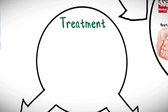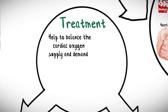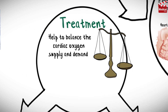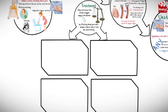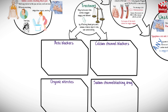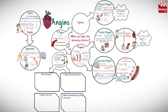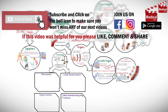To manage the symptoms of angina, we need drugs that help balance cardiac oxygen supply and demand by affecting blood pressure, venous return, heart rate, and contractility. There are four types of drugs that can achieve this, alone or in combination: beta blockers, calcium channel blockers, organic nitrates, and the sodium channel blocking drug ranolazine. These will be covered in the next lecture.